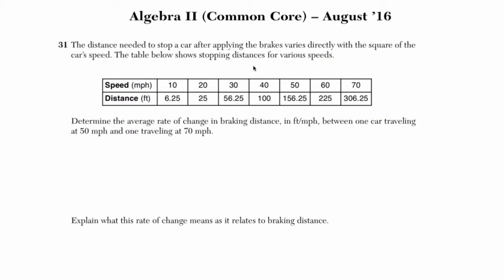If they talk about a relationship here, the direct variation versus indirect variation, we don't really need to get into that. What they really want us to do is, if you look at this table, you've got speed and distance.